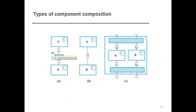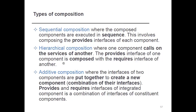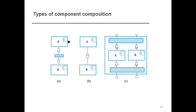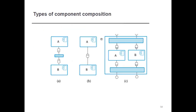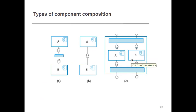We can see in the diagram the first type — sequential — where components execute in sequence; the second — hierarchical — where requires and provides interfaces are interdependent; and the third — additive — where the combination of both interfaces is integrated together to form a new component.